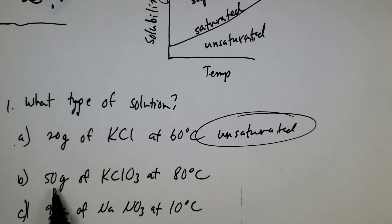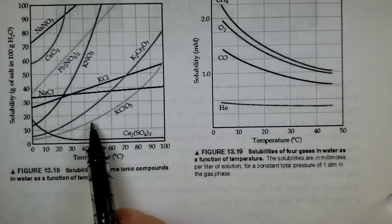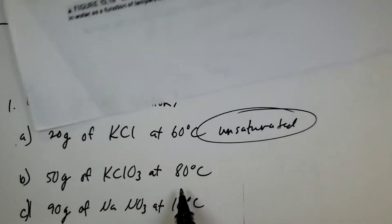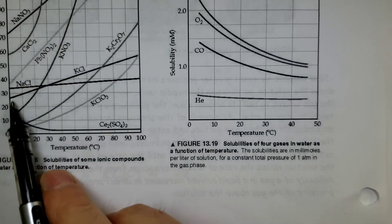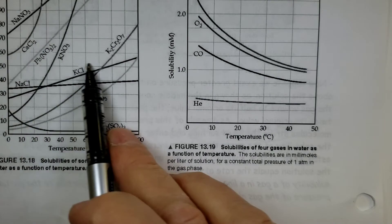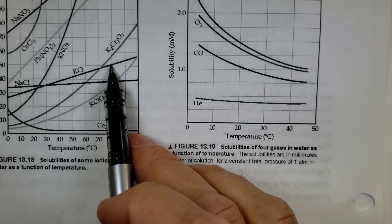Let's look at the next one. 50 grams of KClO3, so let's find the KClO3 line first of all. Here it is right here, KClO3, there's the curve. What if I have 50 grams at 80, so 50 grams at 80, 50 at 80, look at that, I'm right above the KClO3 curve.